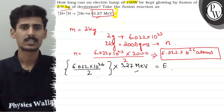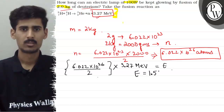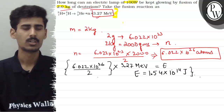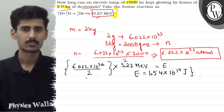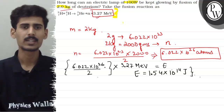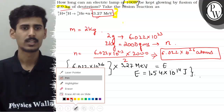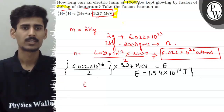This energy will be equal to 1.54 into 10 raise to the power 14 joules. So this much energy will be liberated by this amount of deuterium. Now we see how long this can keep our 100 watts bulb glowing. Basically, energy will be equal to power into time.